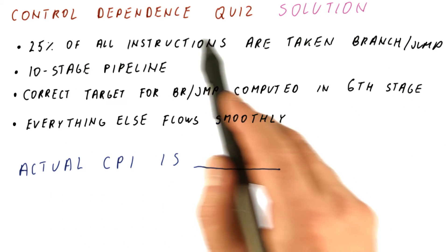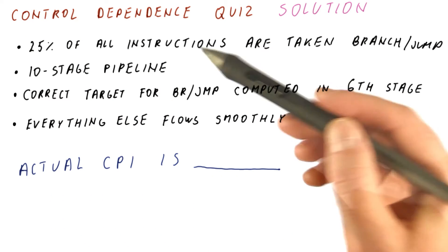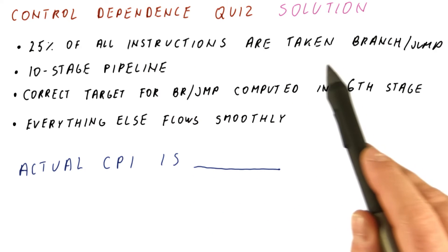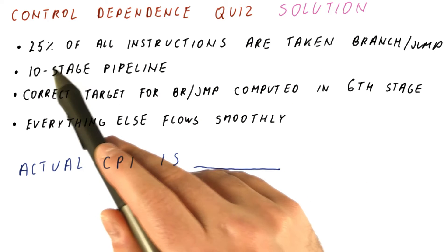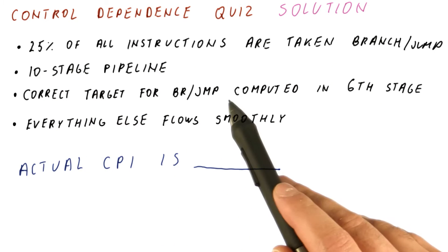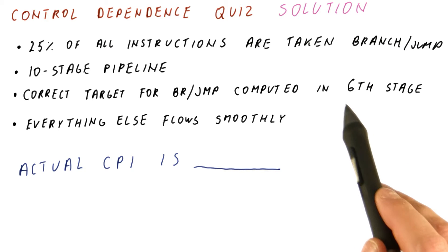Let's look at the solution for our control dependence quiz in a pipeline. We know how many instructions are taken branches. We don't really care that it's a ten-stage pipeline. What we care about is that the branches are resolved in the sixth stage, and that everything else works smoothly.